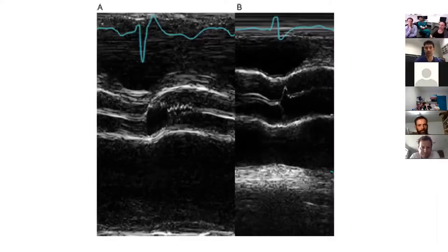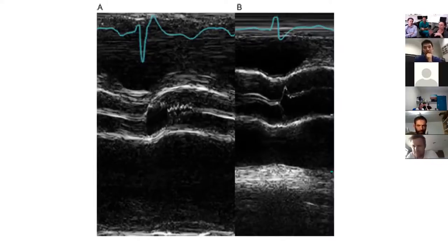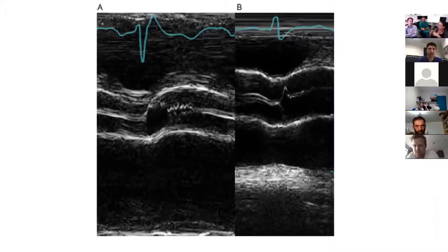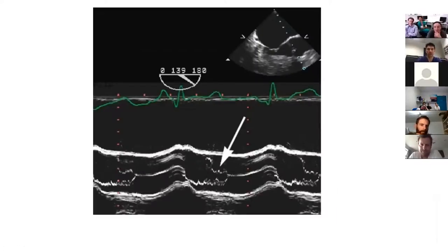The picture on the right shows a sub-aortic membrane — a fixed obstruction at the sub-aortic level. The valve opens very briefly at the beginning of systole and then closes, because there's an obstruction and the force of contraction is easing off for the rest of systole. It's like a fixed structure versus the dynamic type.